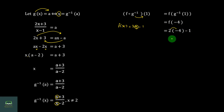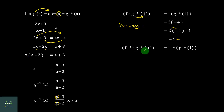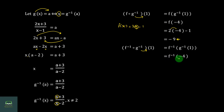Then we will see minus 8, minus 8, minus 8, minus 9. Now we will find f-inverse of g-inverse of 1. Then f-inverse of g-inverse of 1 equals f-inverse of minus 4. f-inverse of x is x plus 1 over 2. We will see you later on.